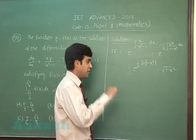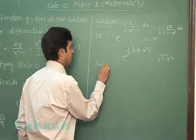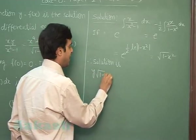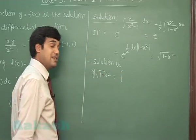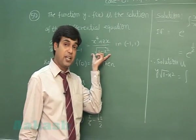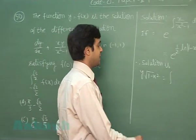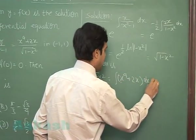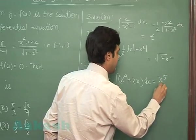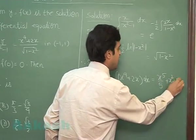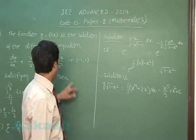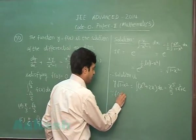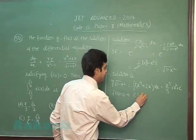Hence, the solution of the differential equation is y root(1 minus x²) equals integral of this term multiplied with integrating factor that is (x⁴ plus 2x) dx. That is x⁵/5 plus x² plus constant. It is given f(0) is 0. Put x and y is 0, 0. So, we get c as 0.